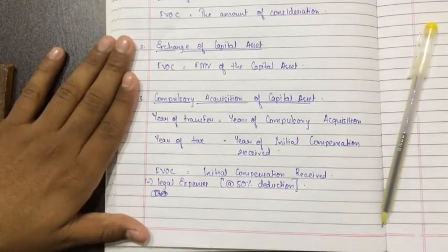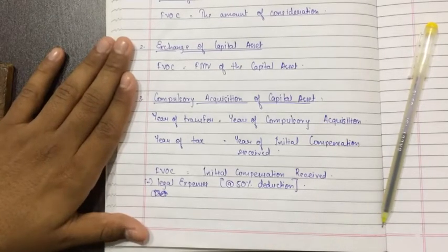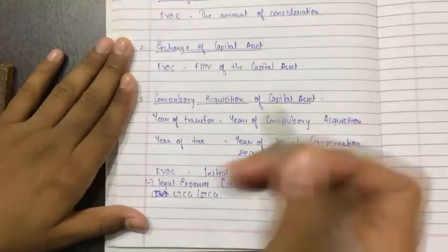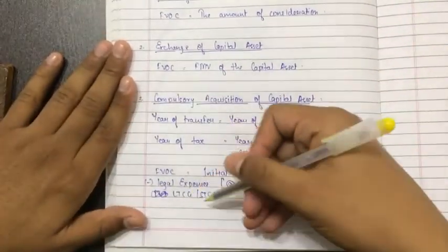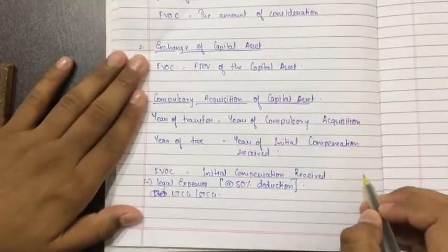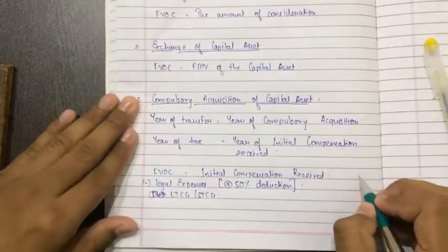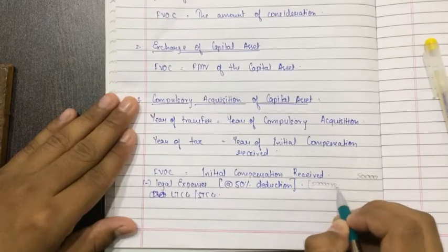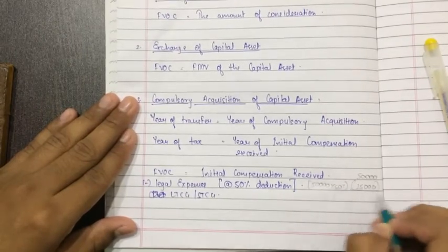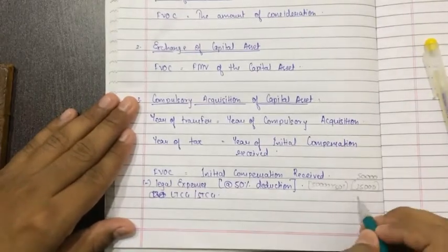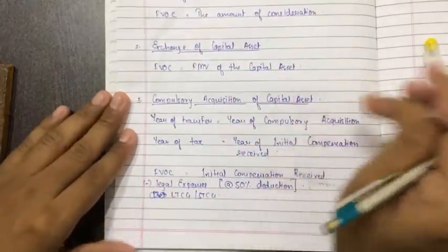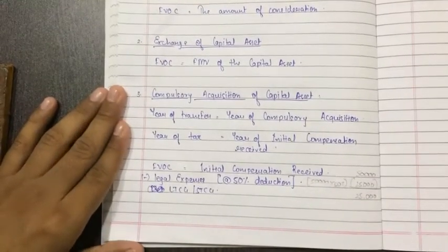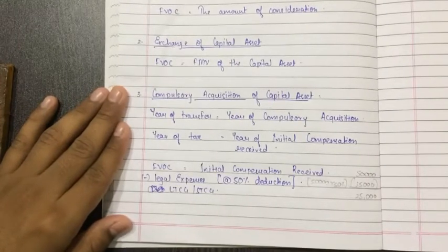There is no cost of acquisition and no cost of improvement — the capital gain comes directly. If the asset is held for more than 36 months it is long-term capital gain; if less, it is short-term capital gain. So assuming long-term or short-term, the capital gain is 25,000. This is how compulsory acquisition of a capital asset is calculated. You will find the sum in the practice manual.